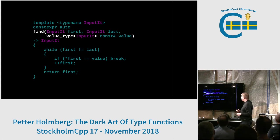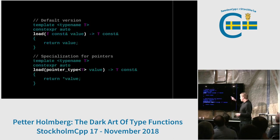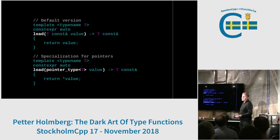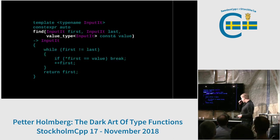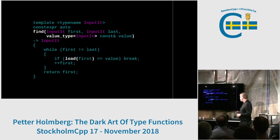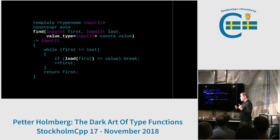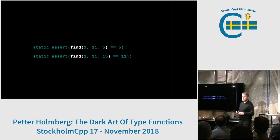Let's also define another function called load. It has two versions. The first is for simple types like int — it takes a value by const reference and returns it by const reference, doing no work at all; it's free to call. Then we add a specialization for pointers using pointer_type, which will follow the pointer returning a const reference to the pointed-to object. Now if we go back to find and replace the dereference with a call to load, the function still works the same when the input iterator is a pointer, but now the input iterator can actually be an integer.